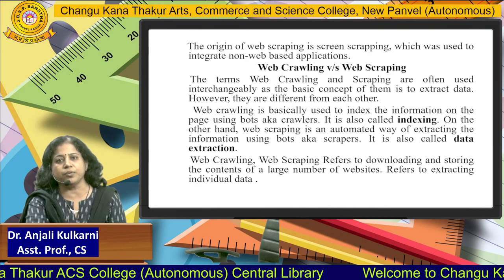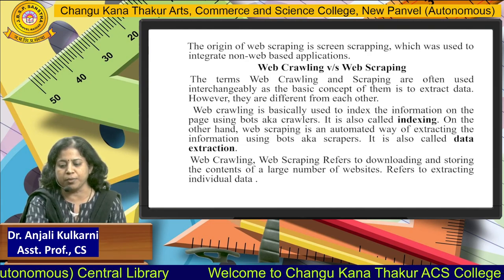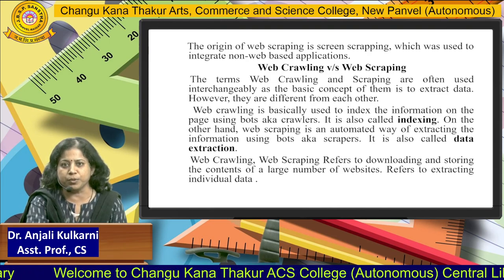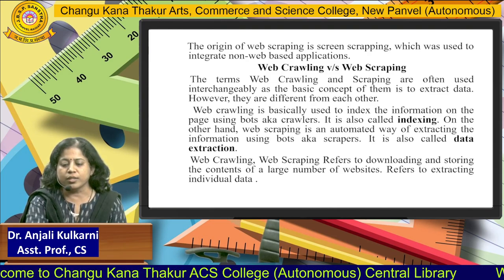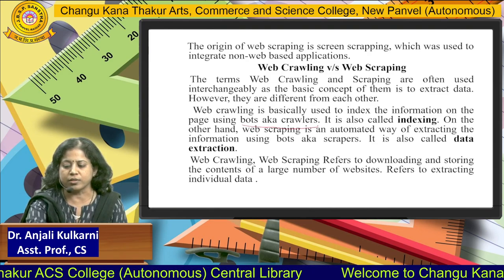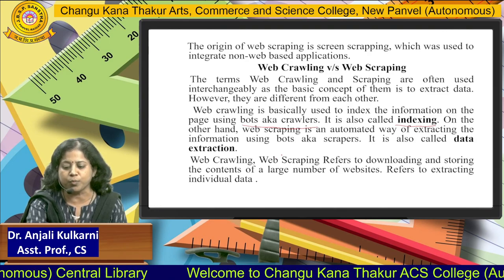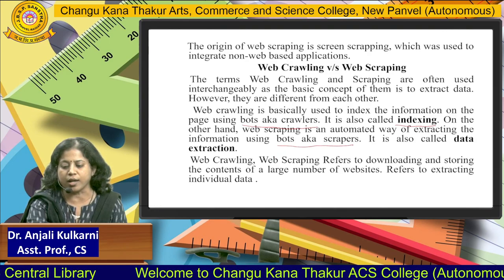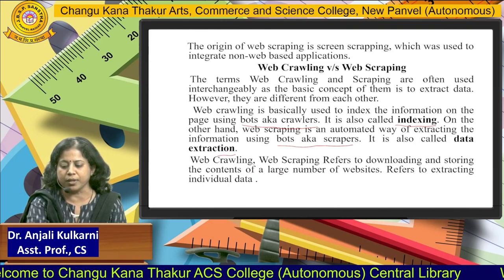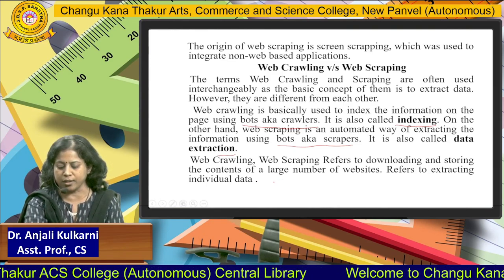There is a difference between web crawling and web scraping. Both are similar concepts in that they extract data, but there is a difference. Web crawling is used to index the information on a page using bots, also known as crawlers — it is also called indexing. On the other hand, web scraping is an automated way of extracting information using bots, also known as scrapers — it is also called data extraction. Together, web crawling and web scraping refer to downloading and storing the contents of a large number of websites and extracting individual data.